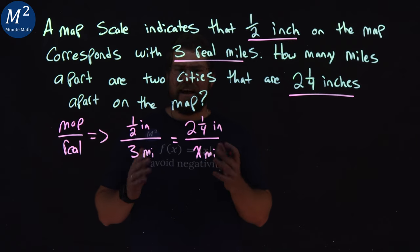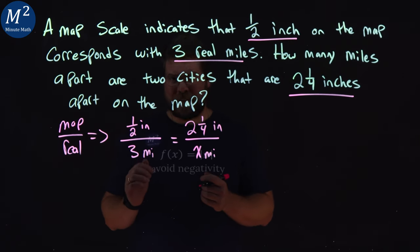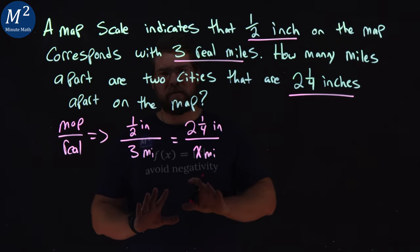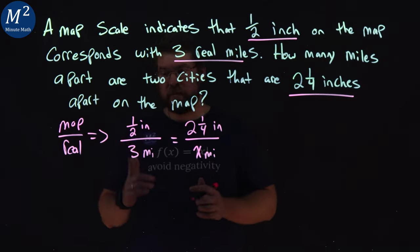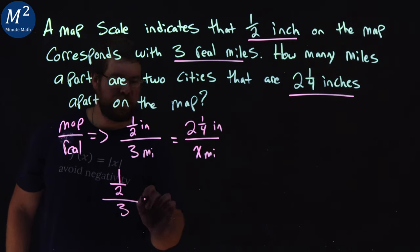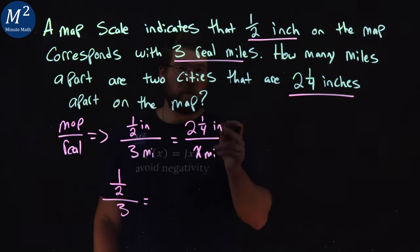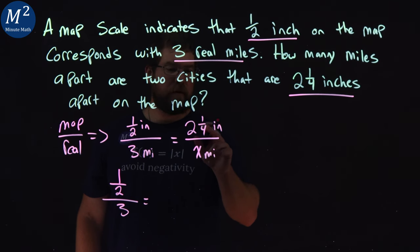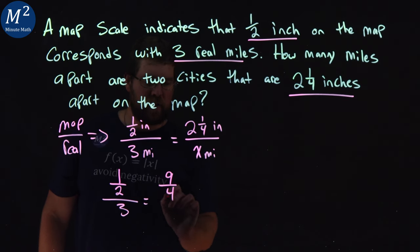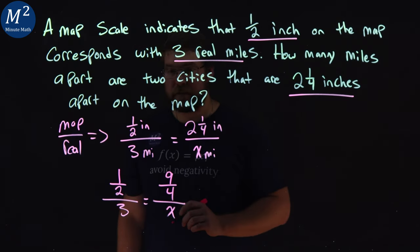Now it gets kind of a little tricky here. Let's rewrite. Let's ignore the inches and miles for right now. Let's just deal with the numbers. So I'm going to rewrite this as one-half over three equals two and a quarter. Let's make that an improper fraction. Four times two is eight plus one is nine. So nine over four over x.